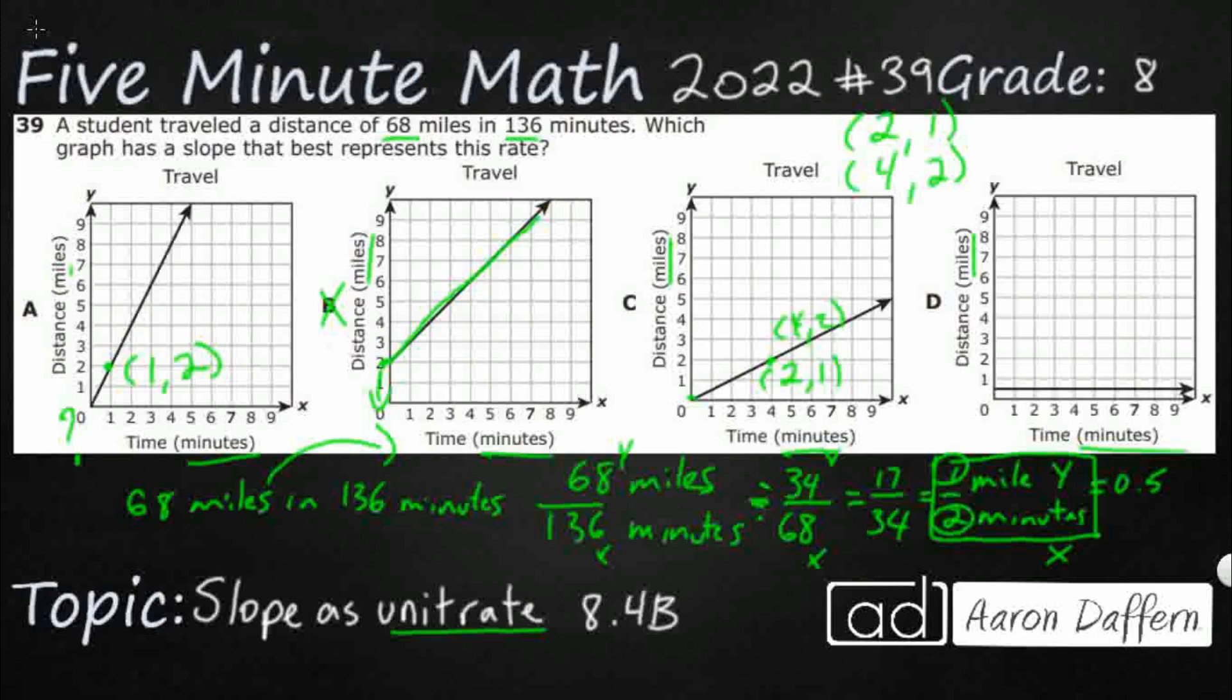And then D is just a straight line. There is no slope. So my answer here is C.